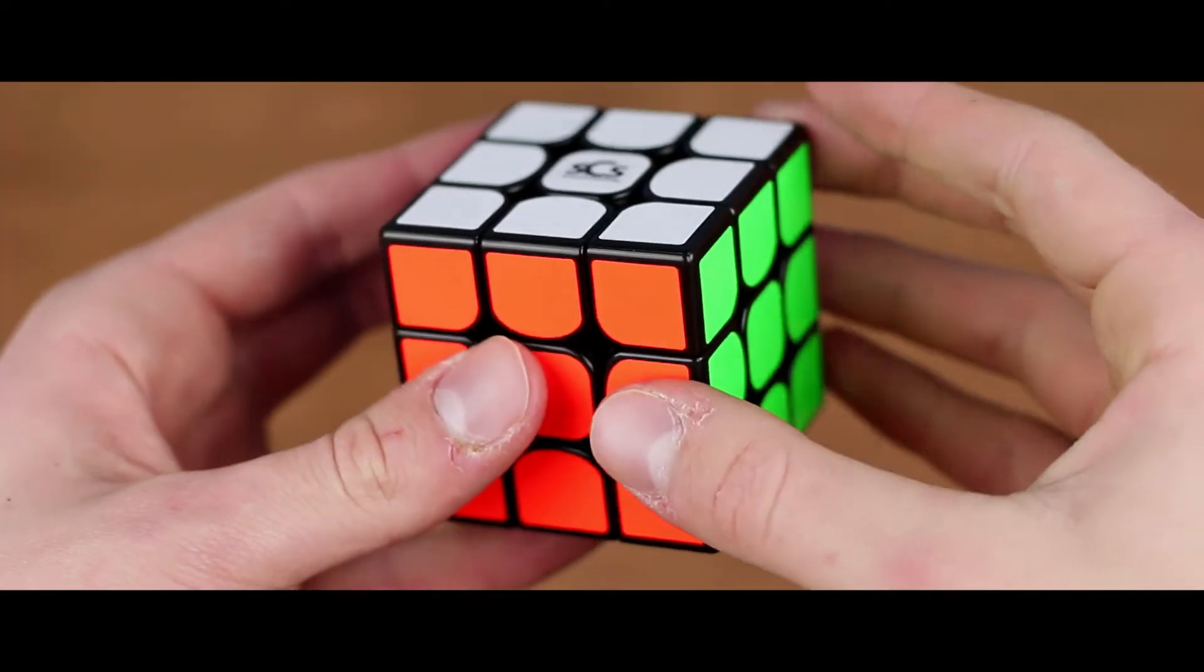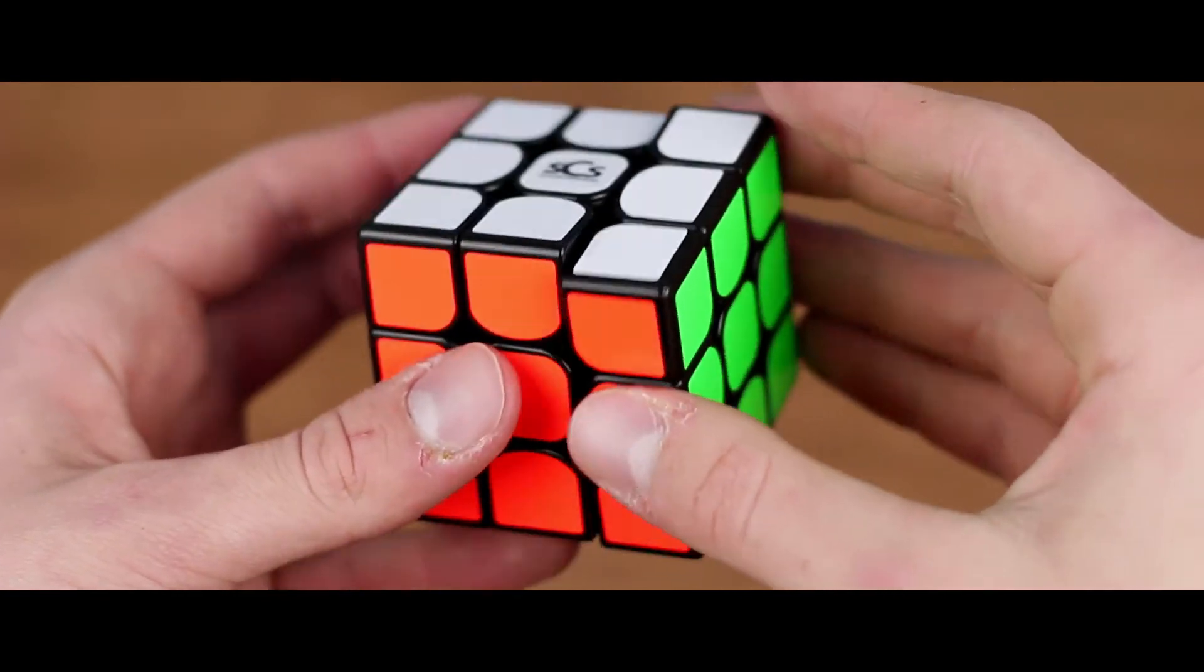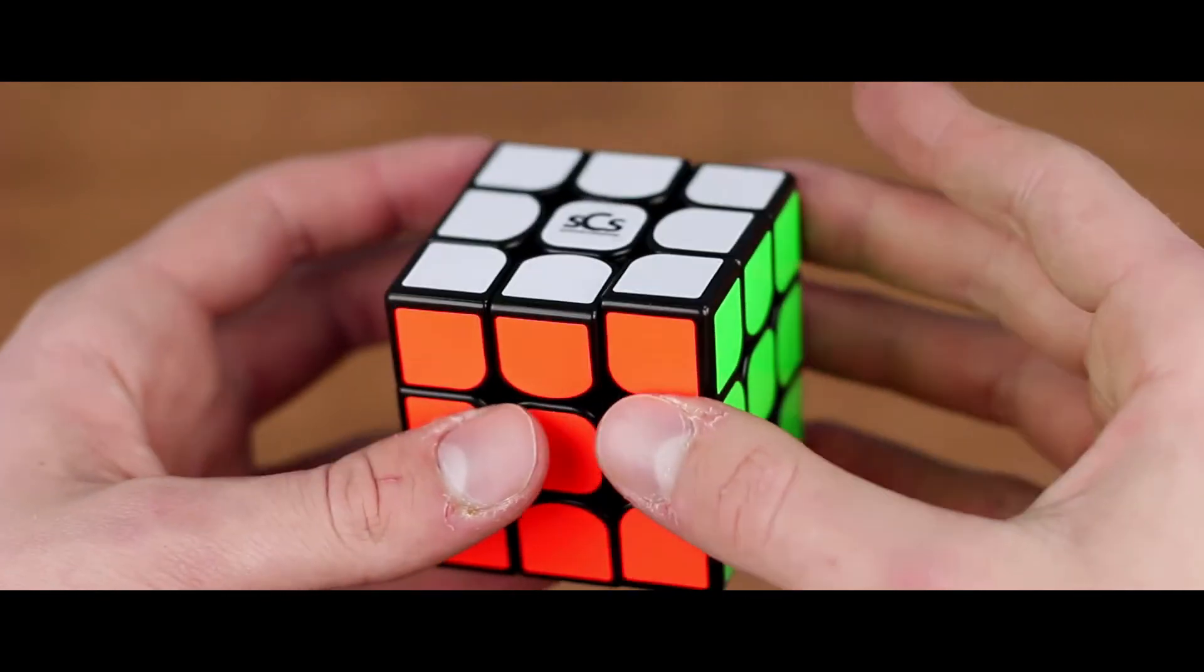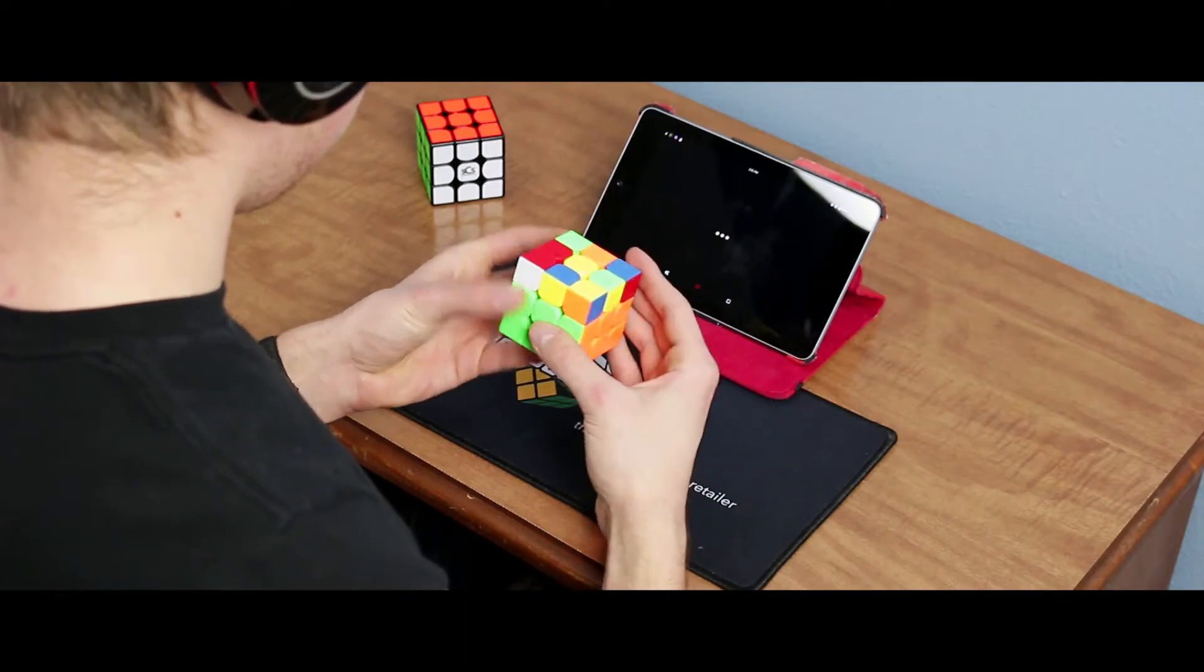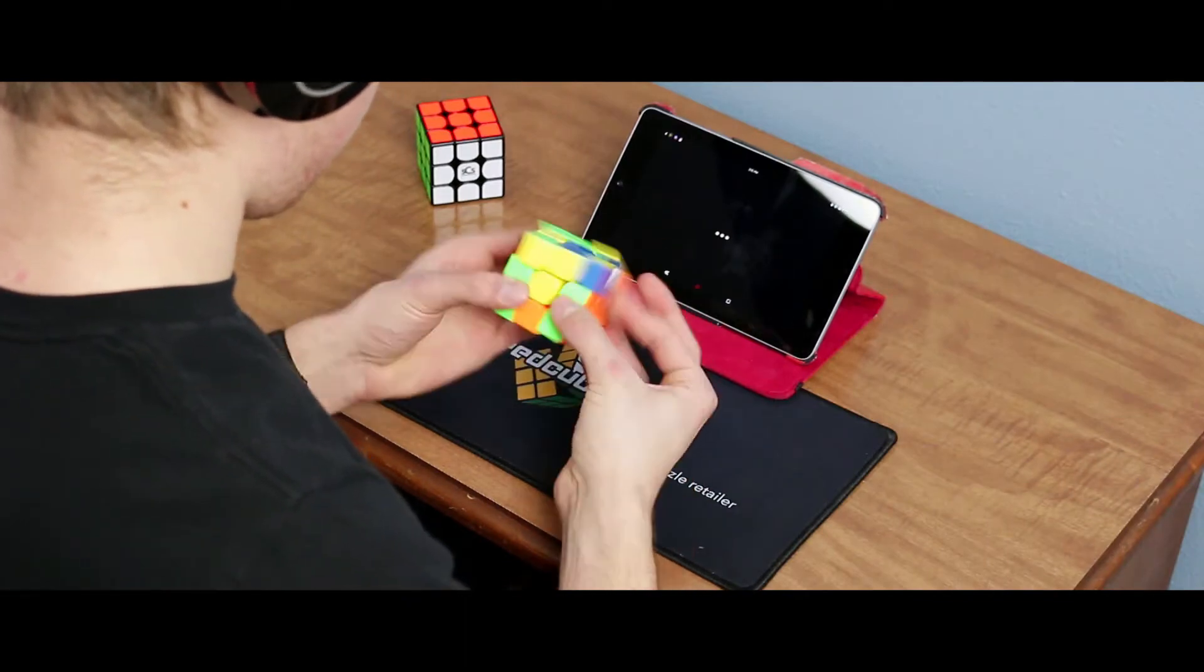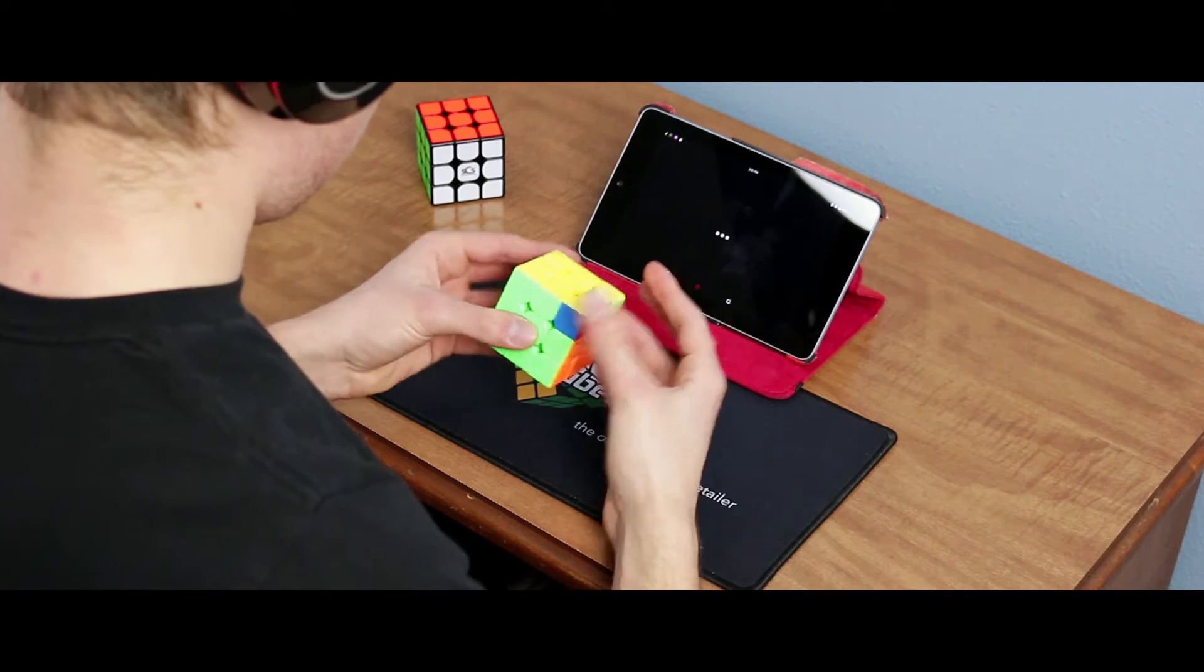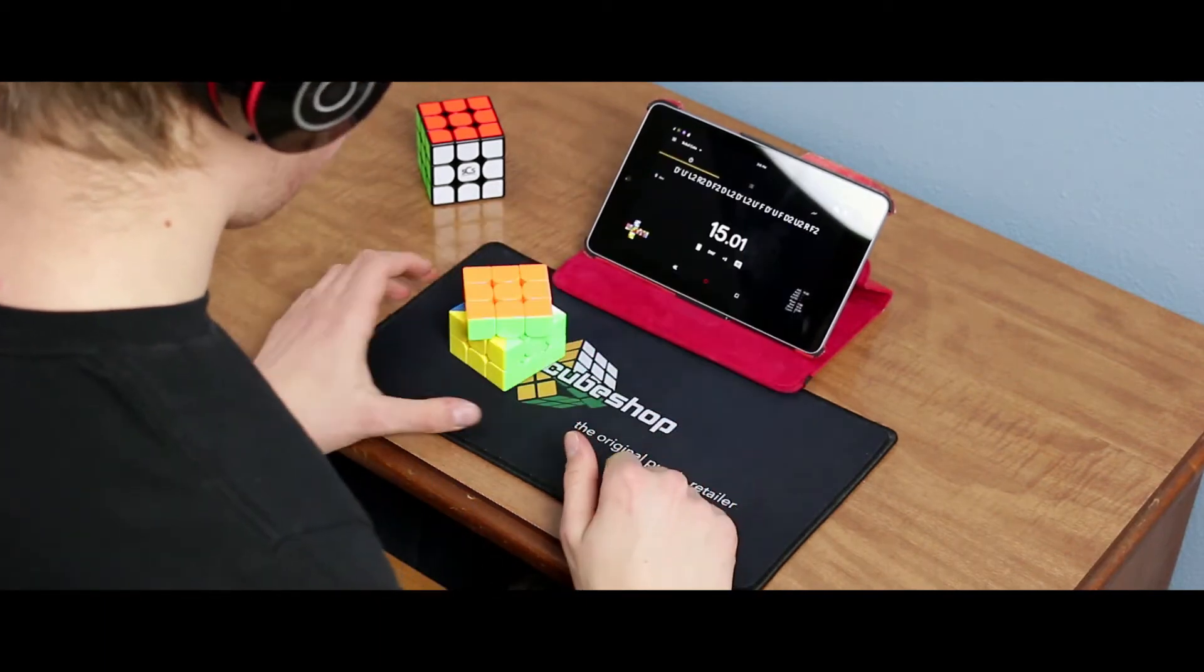The magnets in the Pro-M are definitely on the weaker side, and for this cube that works really well. You can faintly feel them when turning slow, and they aren't really noticeable when turning fast. The cube is also really stable, and the magnets do their job well in both the stability and in the turning.